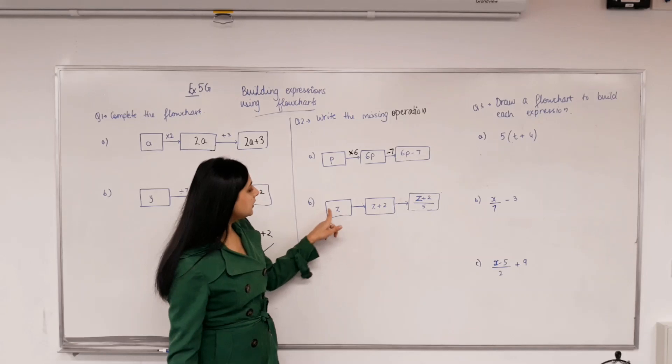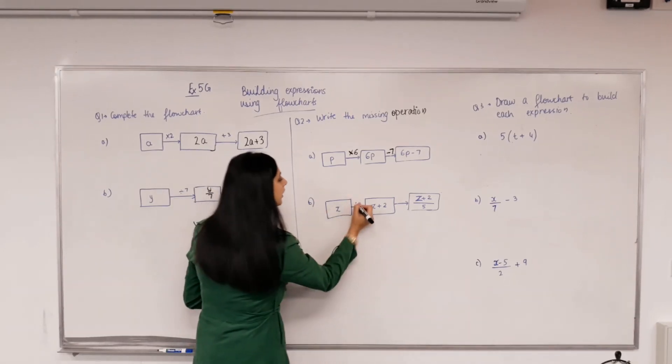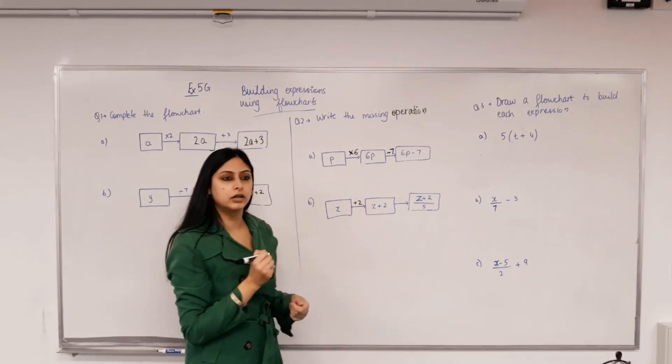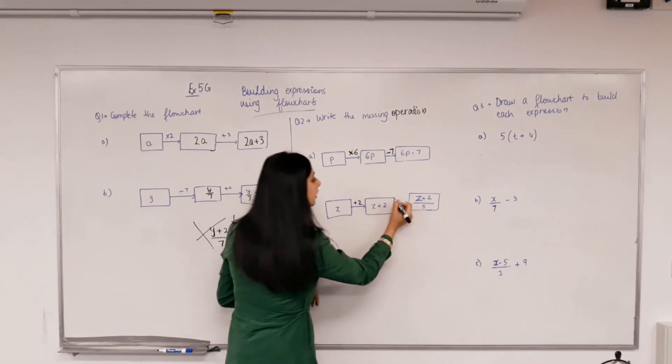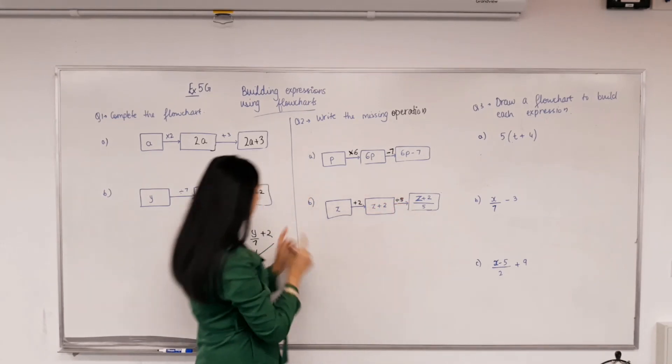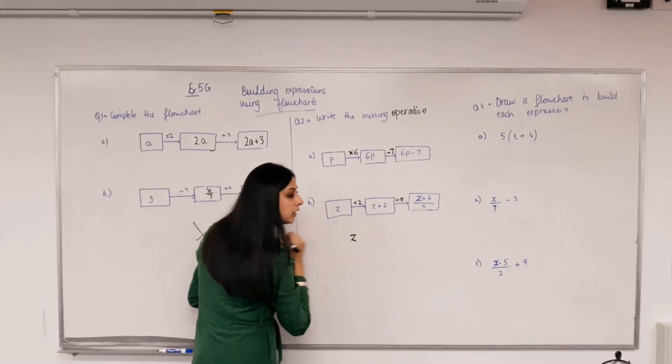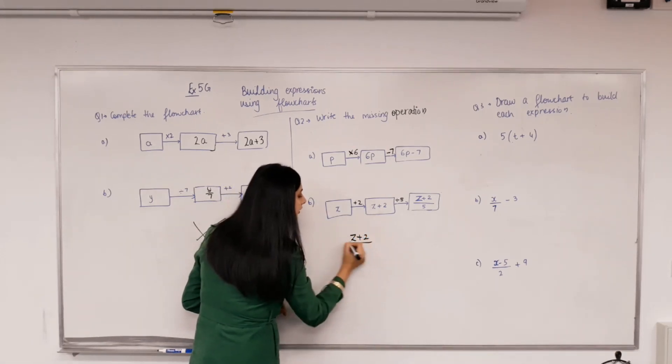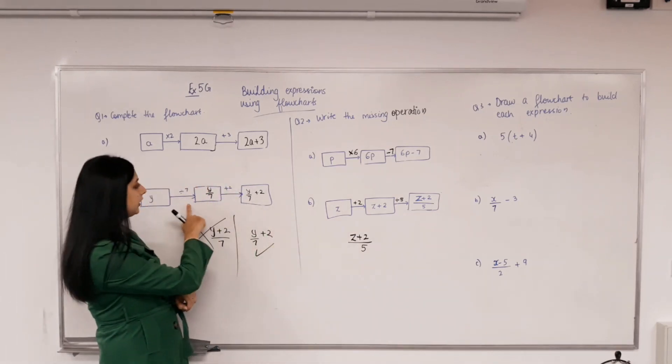Next one. What have I done to z to get z plus 2? You added 2. Yep, so can I write add 2? Yep, well done. Once I've added 2, what am I doing for the whole thing? Dividing by 5. Dividing by 5. And see that's why it's different to that. We added first and then divided, so we had z, we added 2 first and then divided the whole thing by 5, which is different here. We divided it first and then added it. See how these two are different?